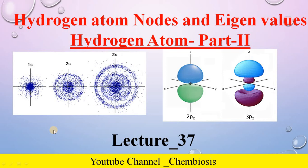Welcome back. This is the 37th lecture on quantum mechanics and also the second part about the hydrogen atomic orbital wave function. In the last lecture I introduced the different hydrogen atomic orbitals. In this lecture I will talk mostly about the nodes present in the hydrogen atomic orbitals as well as the different eigenvalues of the hydrogen atom.